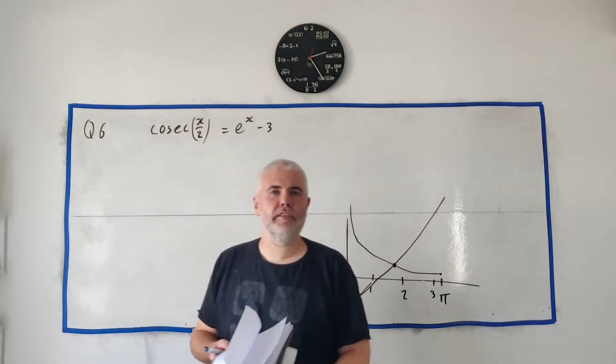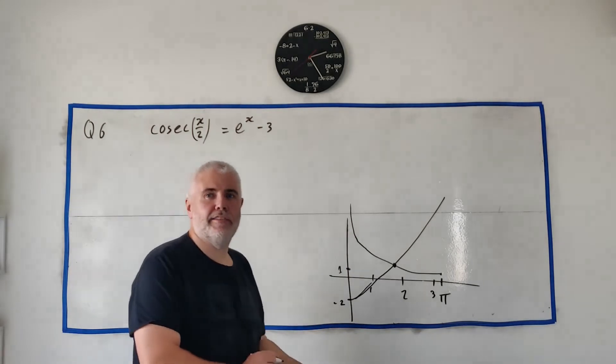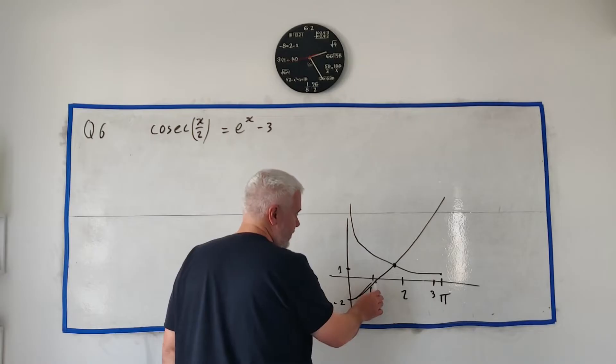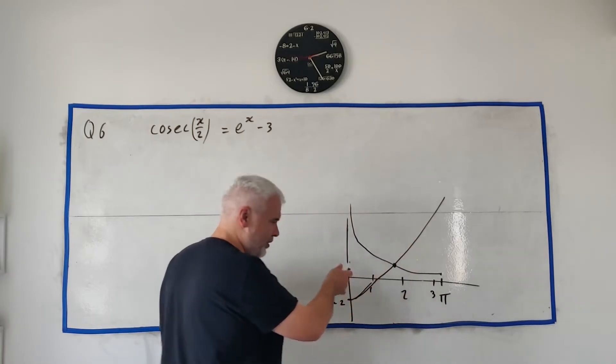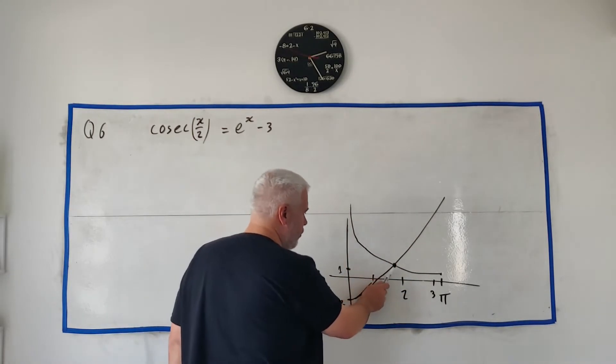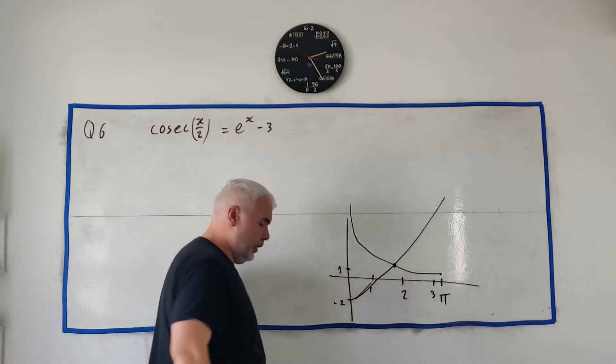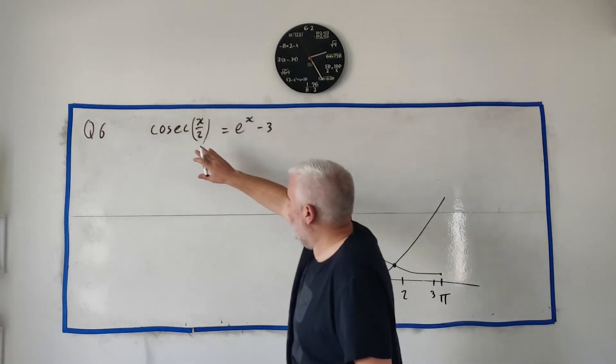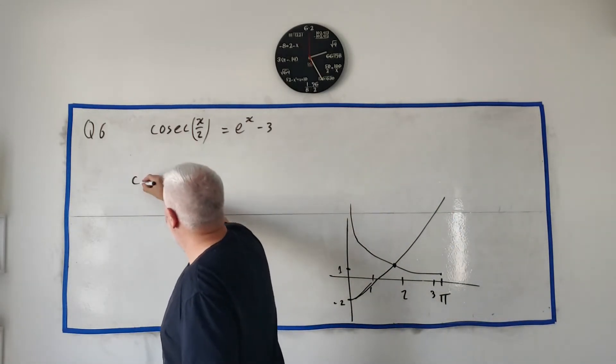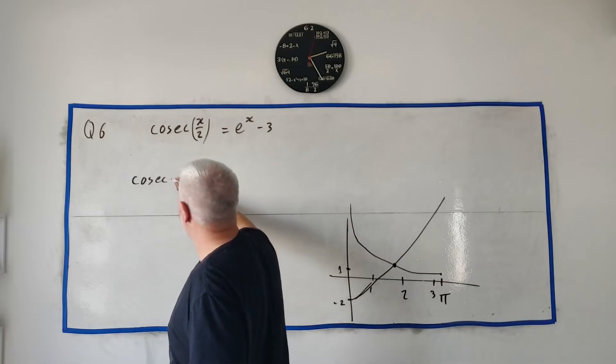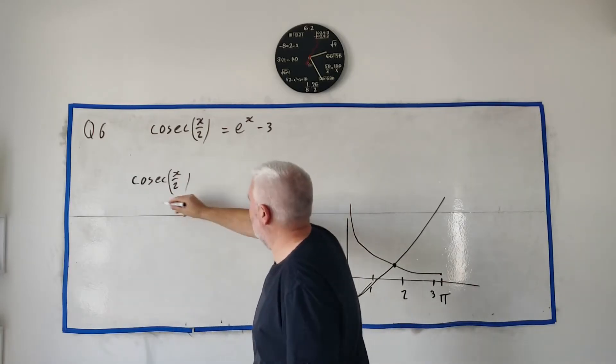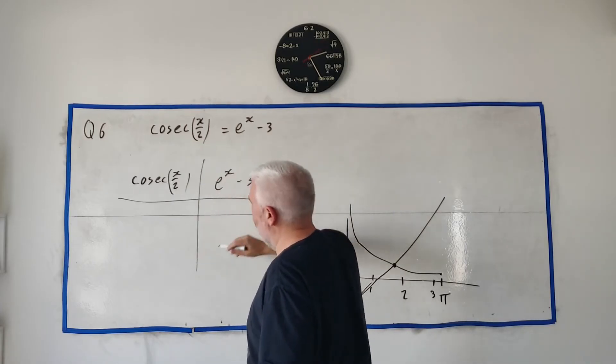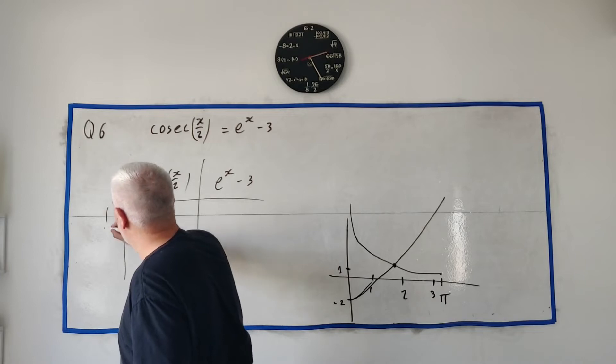In part B, they ask us to verify by calculation that the answer, the root here, lies between 1 and 2. So my drawing actually seems to show it's somewhere between 1 and 2. It's very rough, my drawing. So verify that it does go between 1 and 2. So how do you do this? How I like to do this is, I like to take both sides. On the right side, cosec x over 2 and I like to take e to the power of x minus 3.